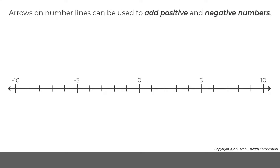Arrows on number lines can be used to add positive and negative numbers. For example, the calculations 5 plus 3 and 5 plus negative 3 can be compared to better understand addition on number lines.